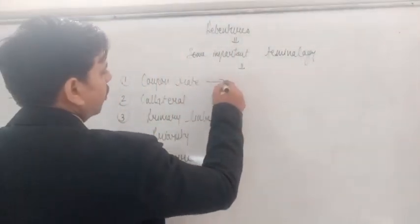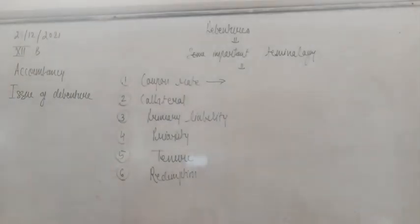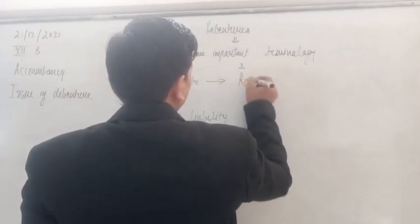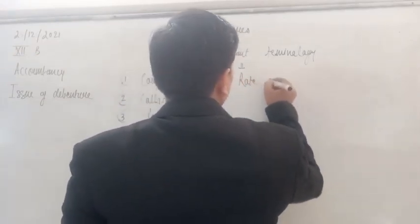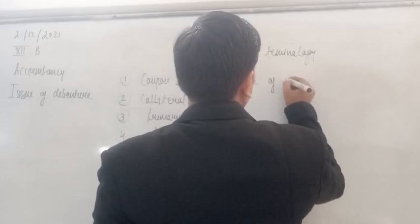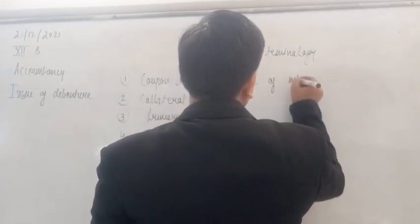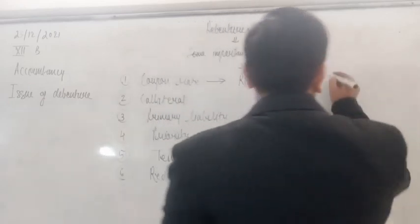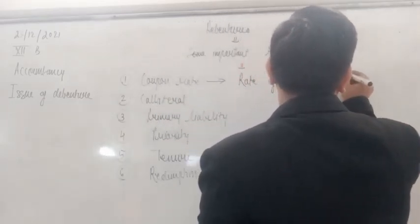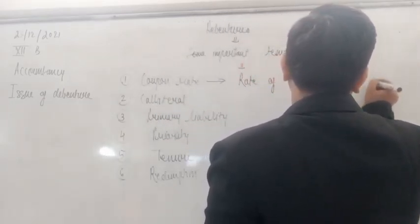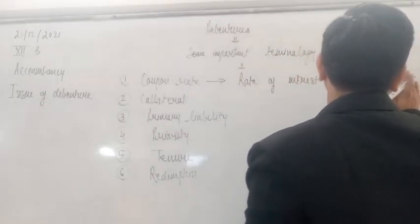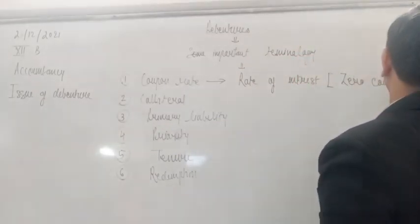Initially we will talk about the coupon rate. Coupon rate means the rate of interest mentioned on the certificate. If nothing is specified in the Debenture, it is called a zero coupon bond.